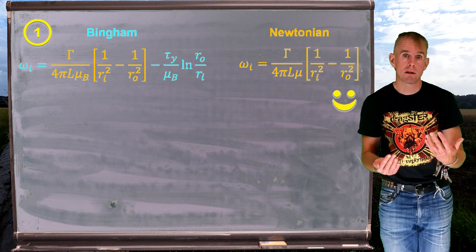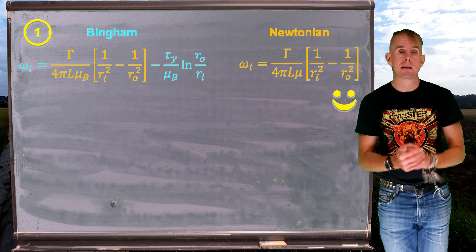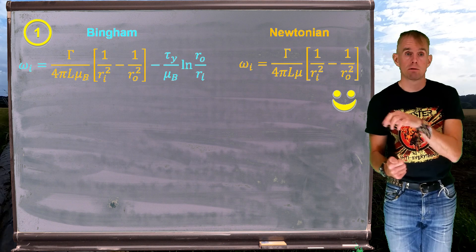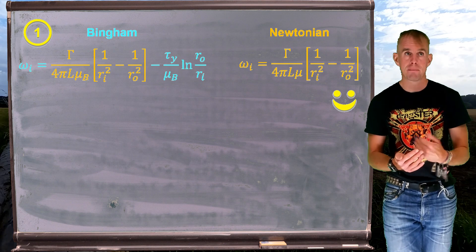So this is my sanity check and I'm happy with that because that's entirely what we would expect. If tau y equals zero, the yield component of Bingham is gone, which leaves just the Newtonian component left. So that's a good result. It means that our maths is right.